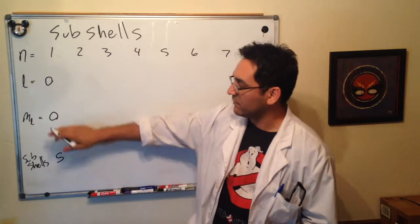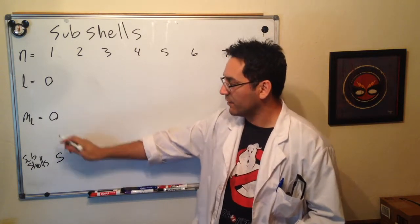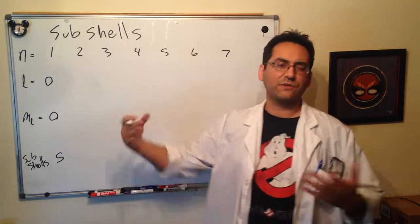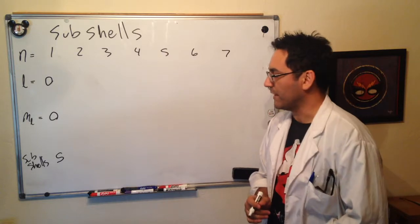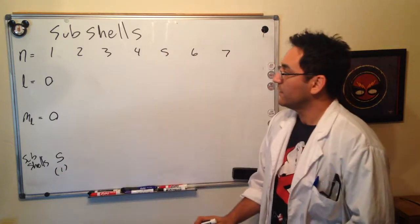And we only have, well, in this case, we have 1. And remember, the values of l equals 0 and ml is 0 still count as a subshell. Okay. So we get 1, and maybe I'll put that in parentheses.